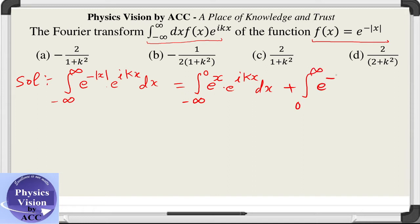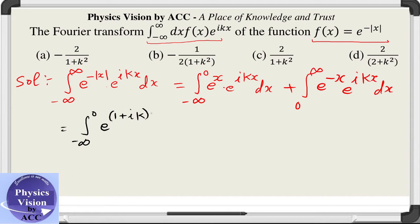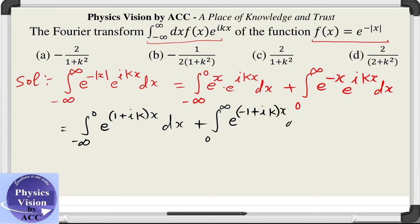Plus integration from 0 to infinity, where |x| carries a negative sign, giving e raised to the power minus x, times e raised to the power iota kx dx. Now let us solve each integration part. The first integral is from minus infinity to 0 of e raised to the power (1 + iota k)x dx, plus the integral from 0 to infinity of e raised to the power (minus 1 + iota k)x dx.